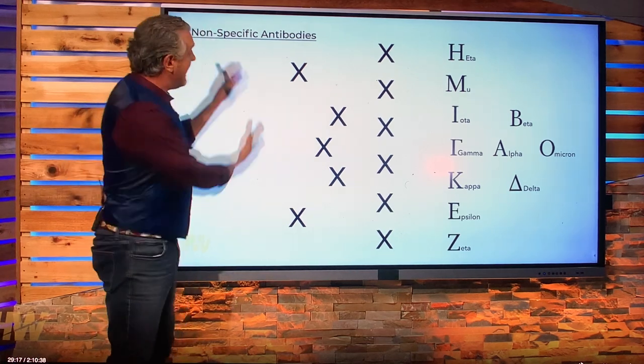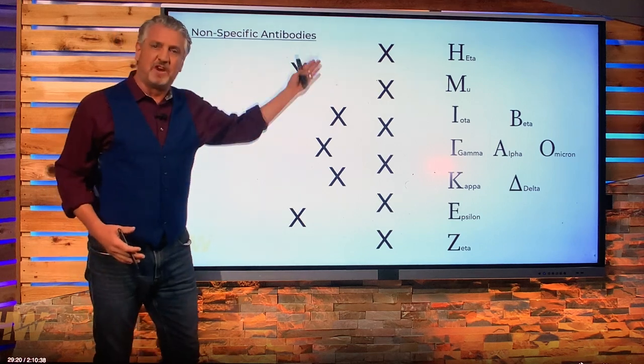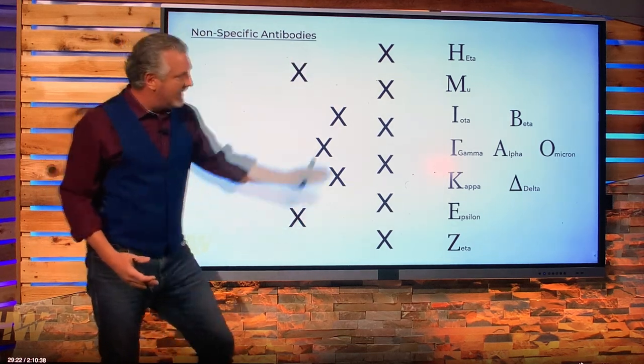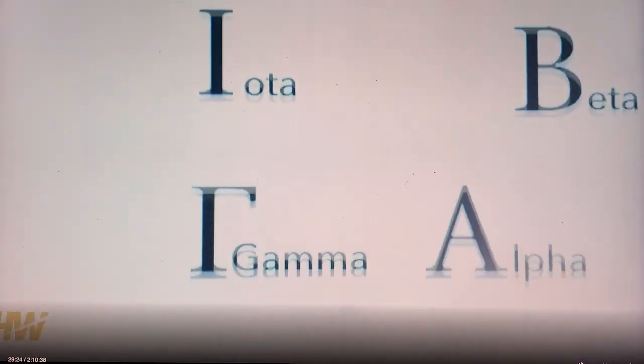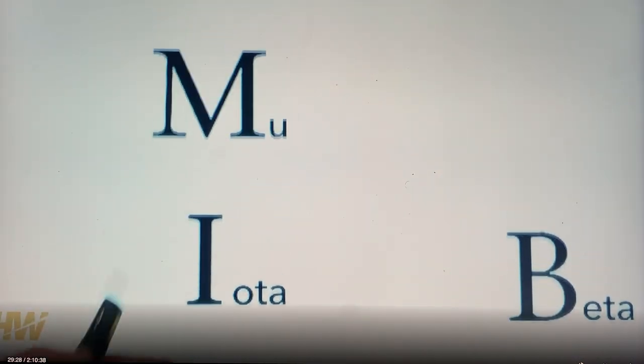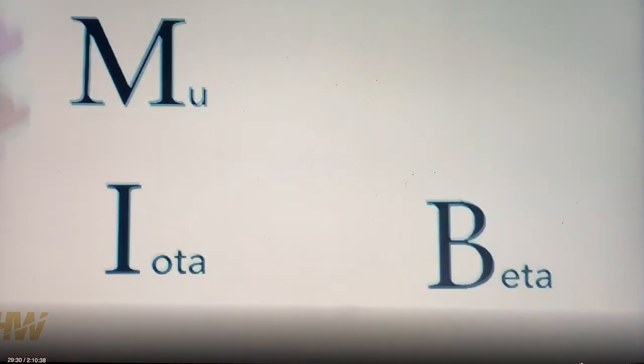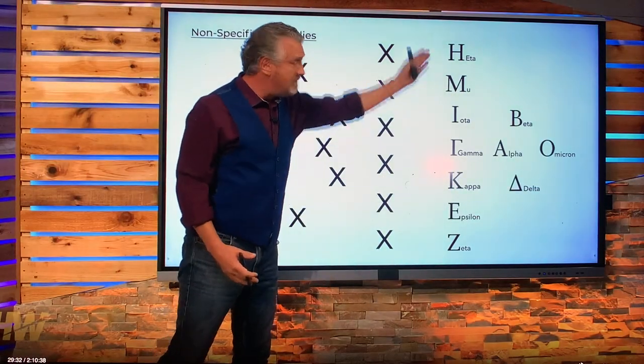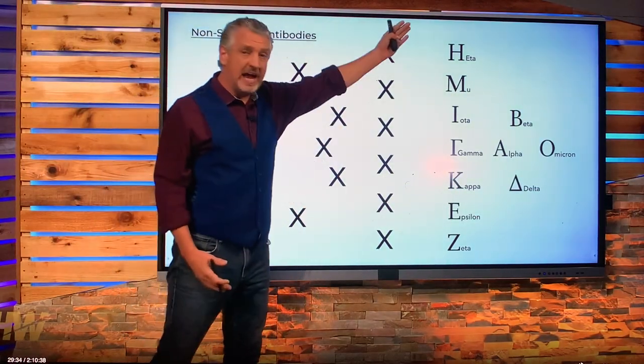By having a nonspecific antibody, think of it as a football game. This is our team, and this is all of the 12 variants that are out there that we're talking about, including alpha, beta, delta, omicron. These other ones exist too. So we're up against this football team. This is what's out there.